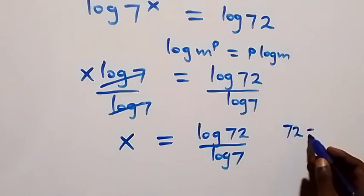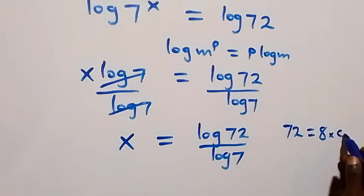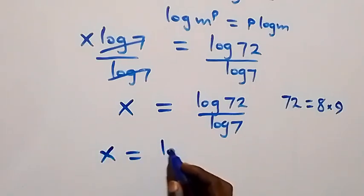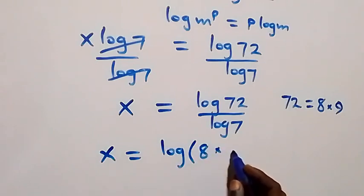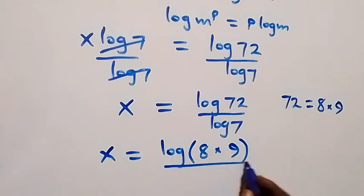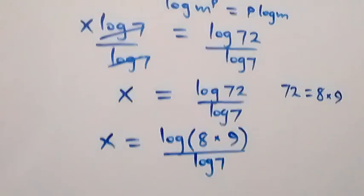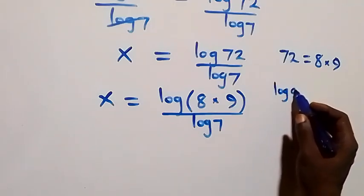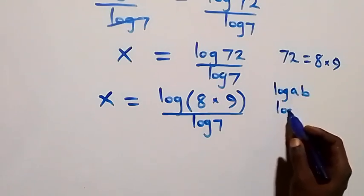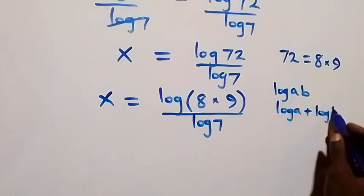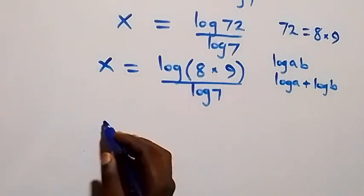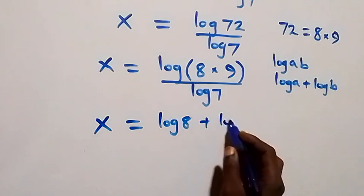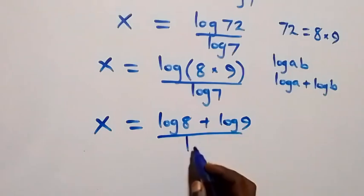We can write 72 as 8 times 9, so x equals to log of (8 times 9) over log 7. Applying the logarithm product law — log(a times b) equals log a plus log b — this becomes x equals to (log 8 plus log 9) over log 7.